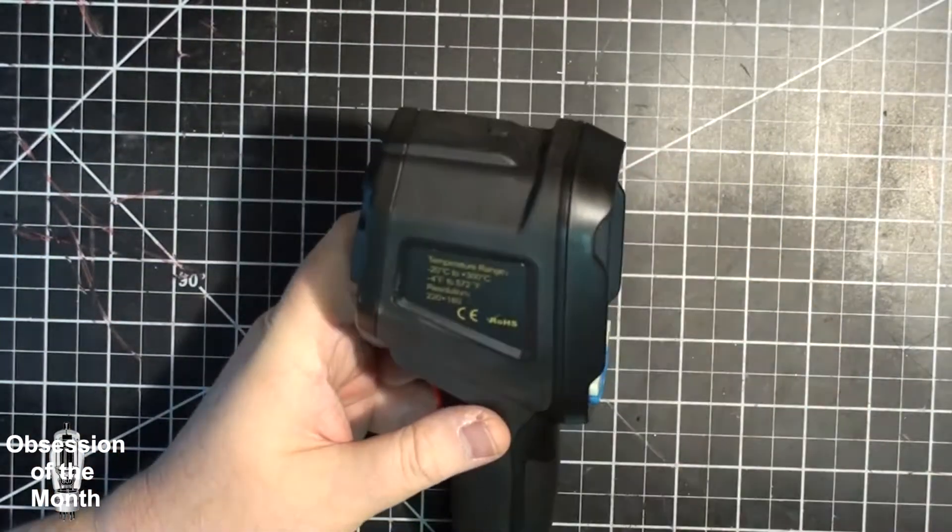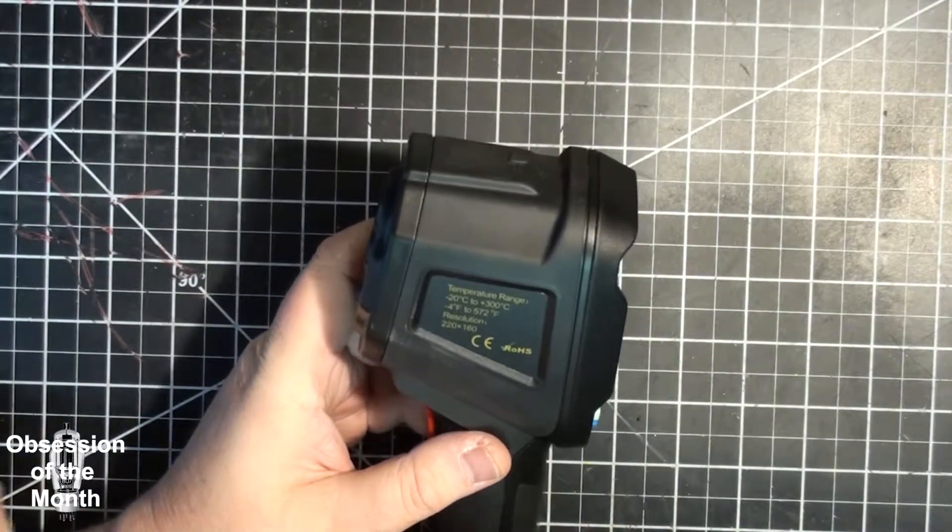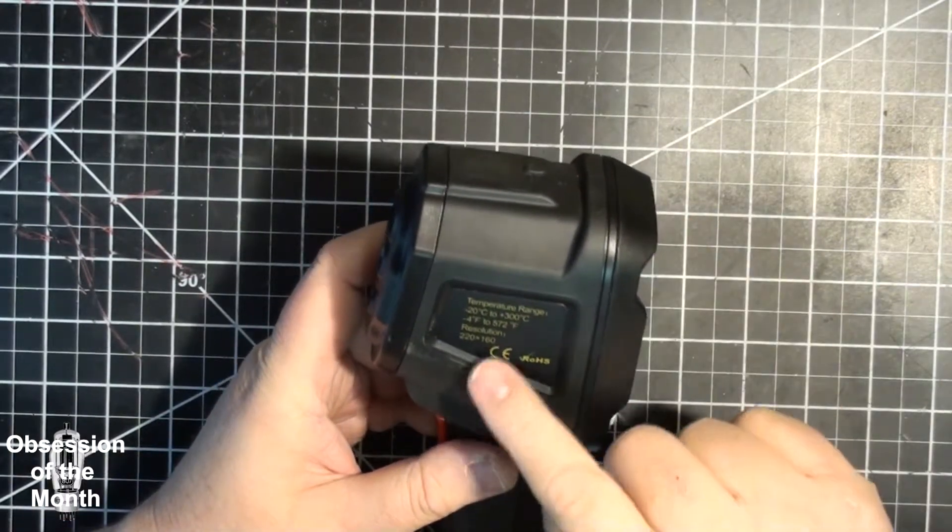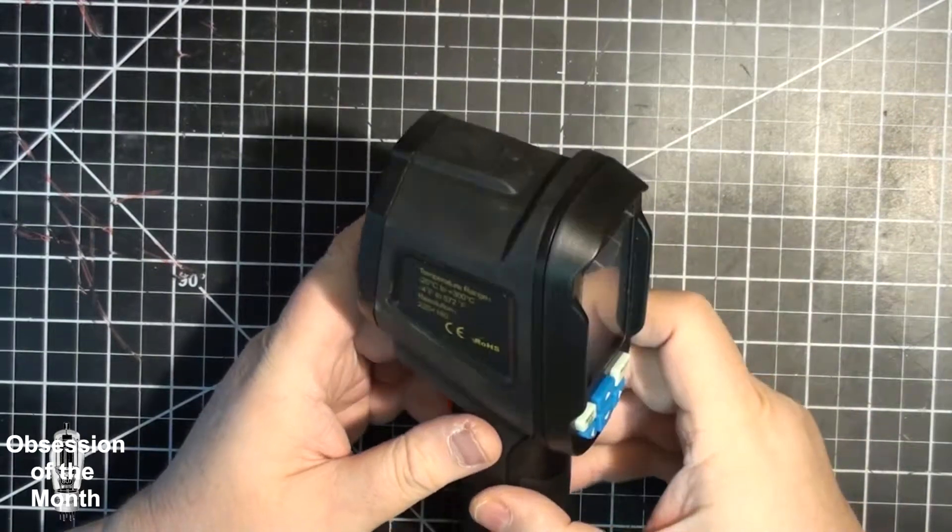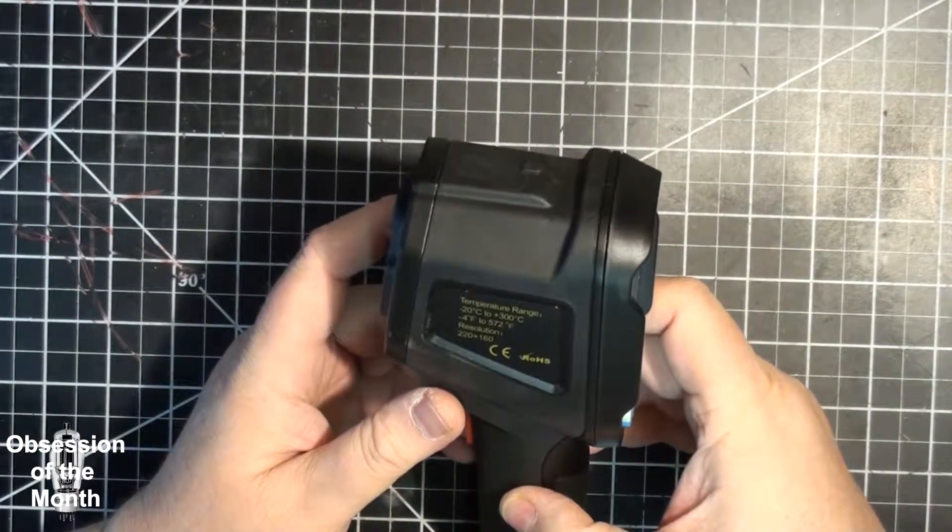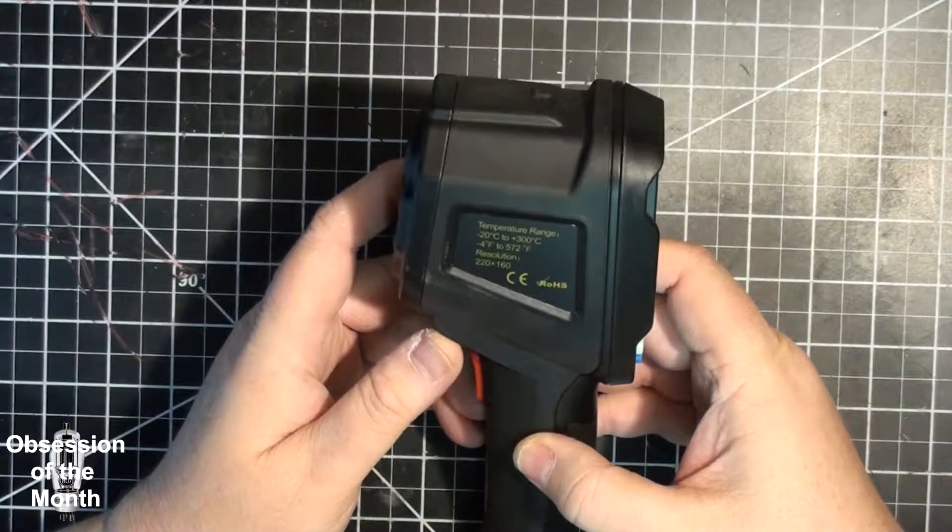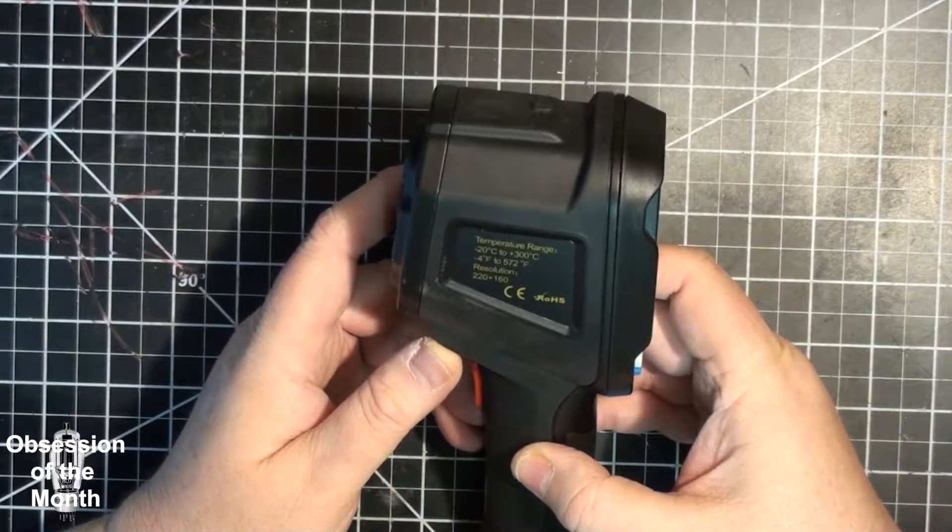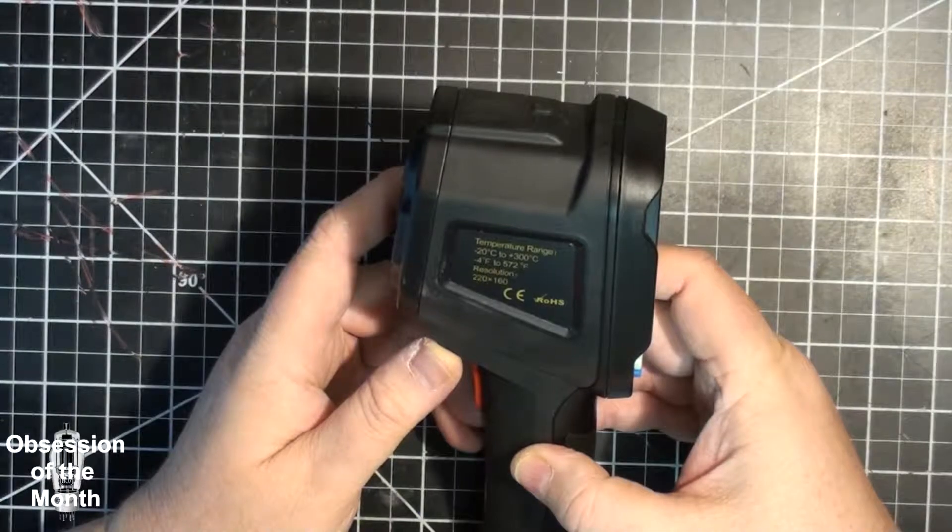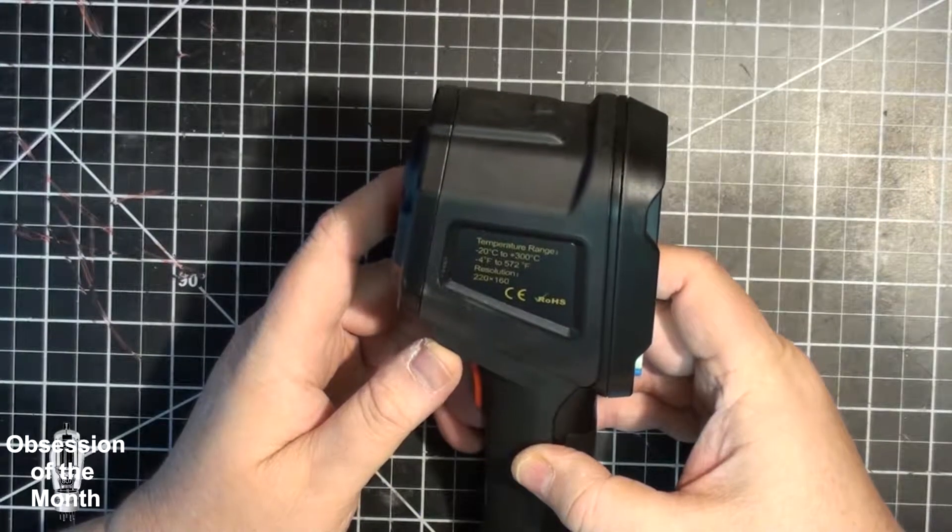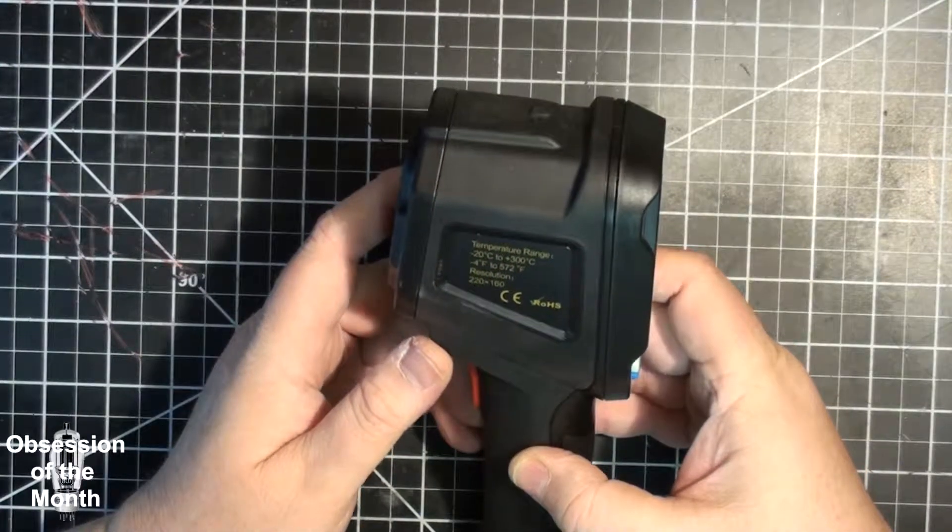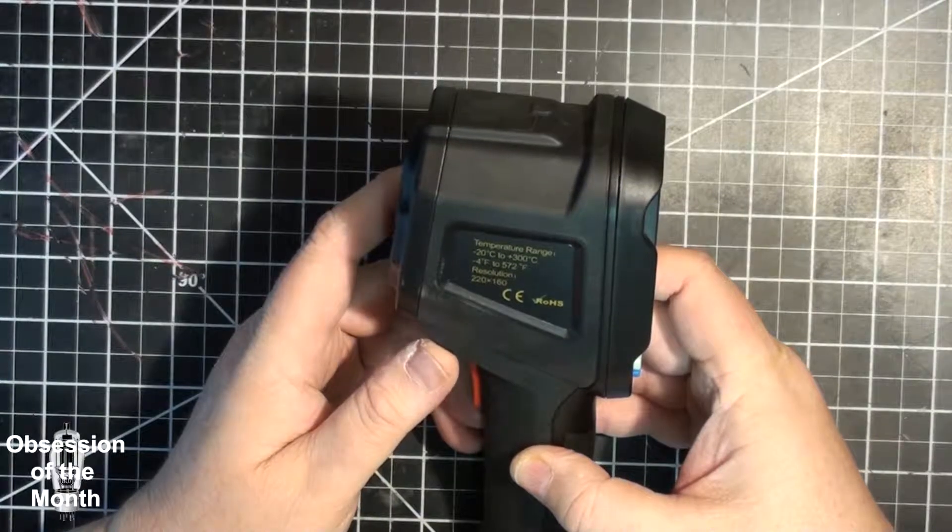We have a display that is the resolution is 220 by 160. This thing can view or show temperatures in the range of minus four degrees Fahrenheit to 572 degrees Fahrenheit and minus 20 degrees Celsius to 300 degrees Celsius.